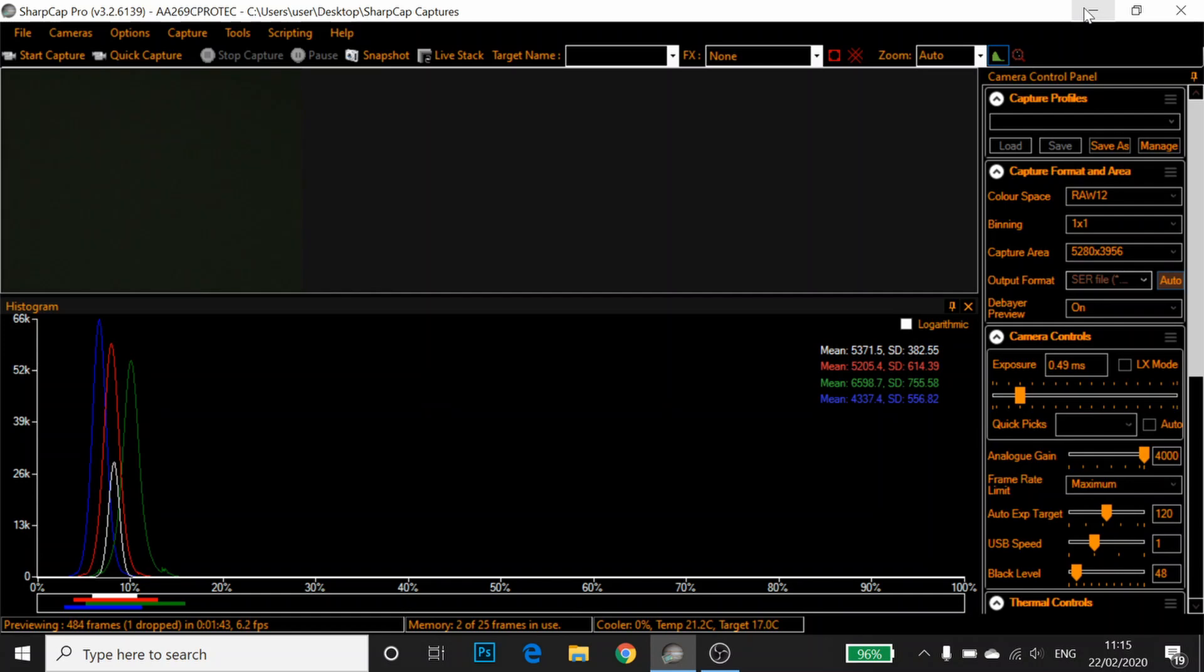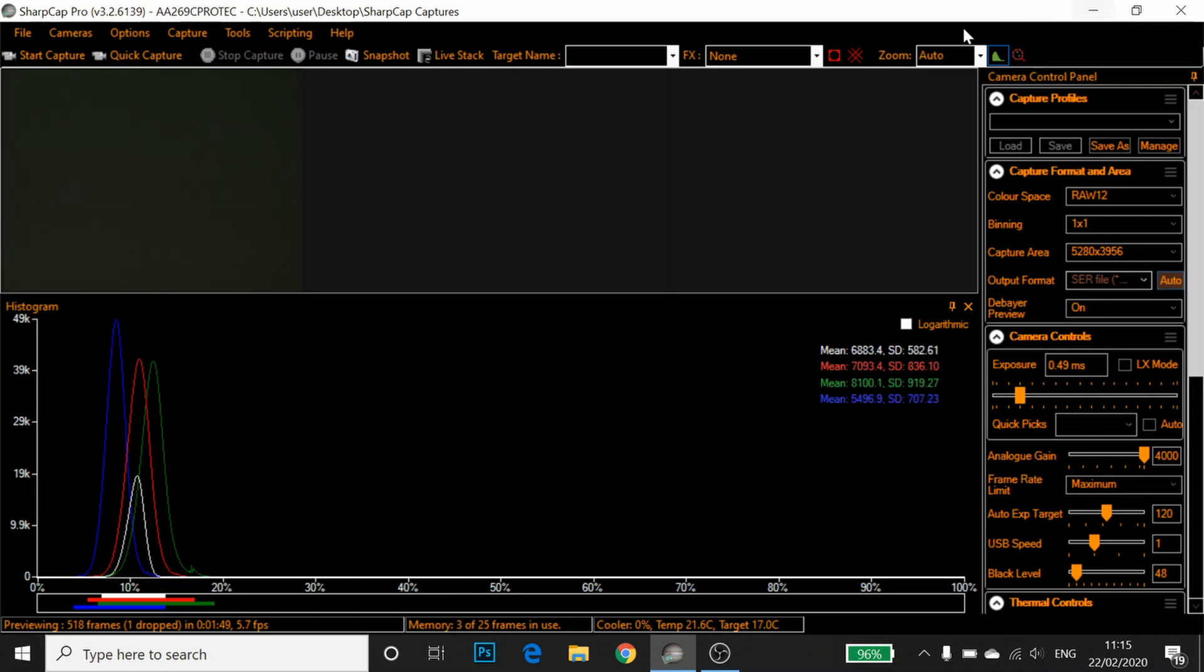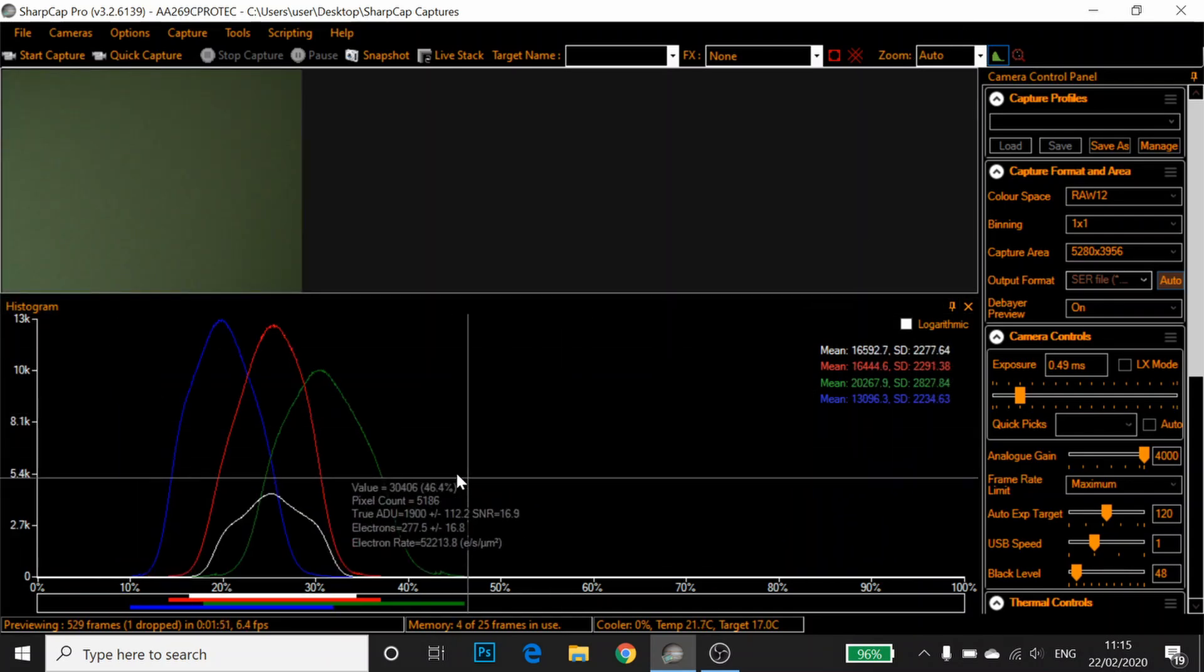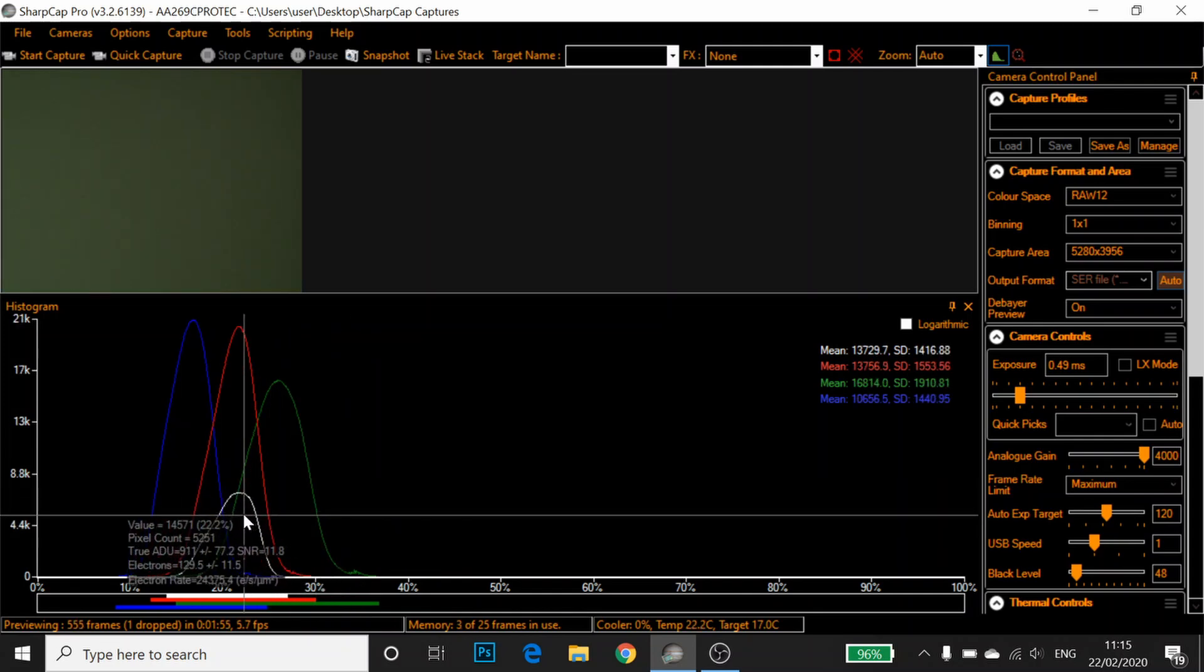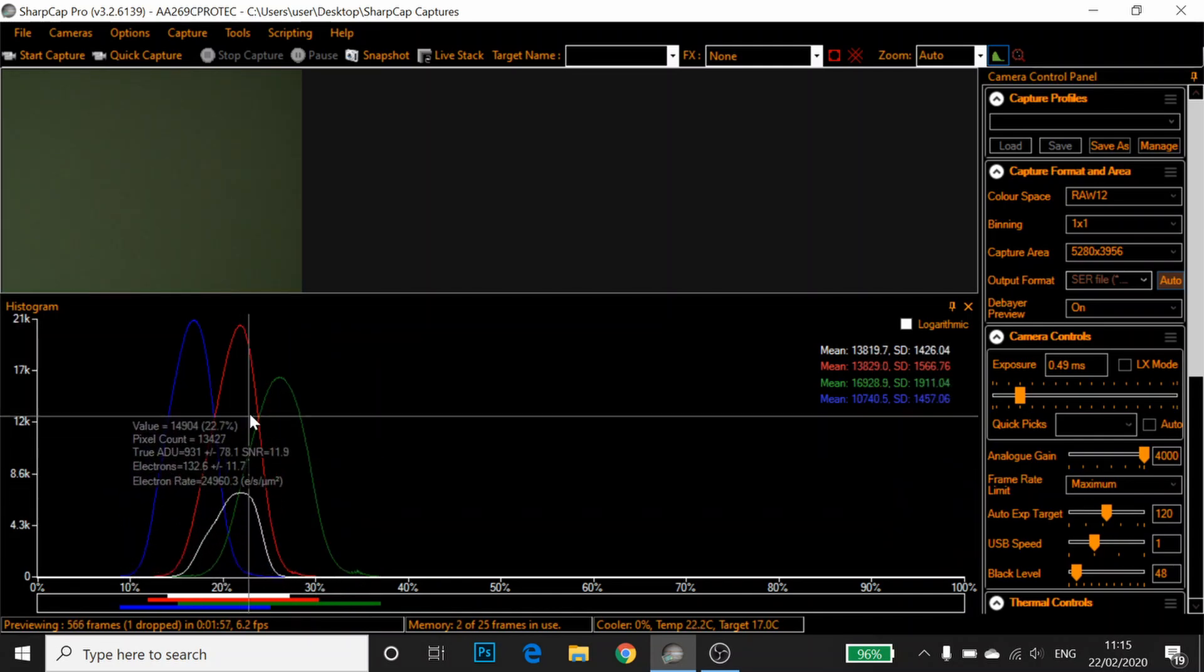SharpCap can be confusing for example, because if we look at the histogram, I've just pointed it at the window, that's why the peaks look a bit strange. You can see as we hover over the histogram, it gives us a few values.